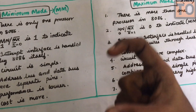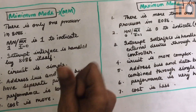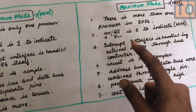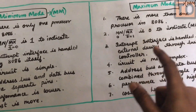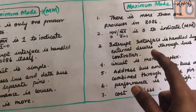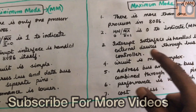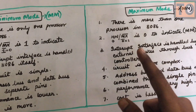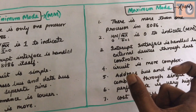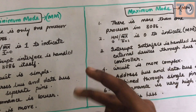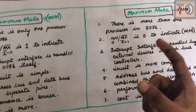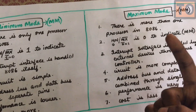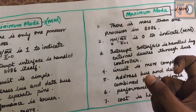In maximum mode, to handle interrupts you have to use external devices. You also have to use bus control, and you can use a 20-bit address with a single bit for bus control.